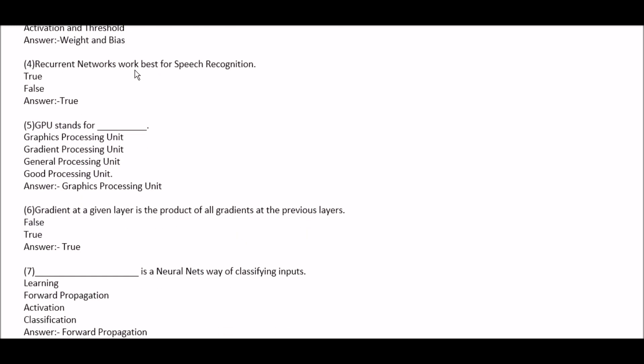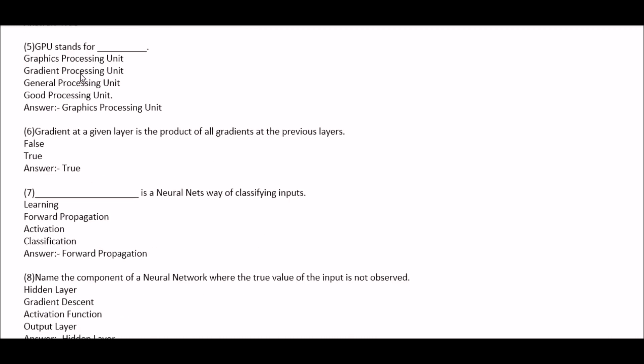Recurrent networks work best for speech recognition — true or false? This is true. Next question: GPU stands for — option A: graphics processing unit. Option B: gradient processing unit. Option C: general processing unit. Option D: good processing unit. Right answer is option A, graphics processing unit.